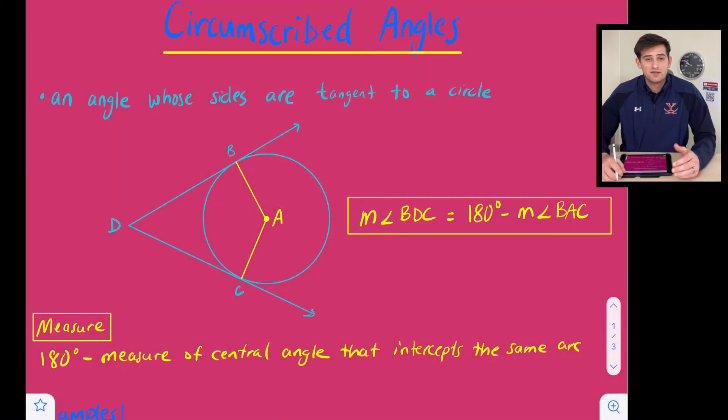Hello everybody, in this video we're going to talk about circumscribed angles. A circumscribed angle is just an angle whose sides are tangent to a circle. If we see our diagram right here on circle A, we have tangent DB and tangent DC, and we can create our central angle, which is angle BAC.